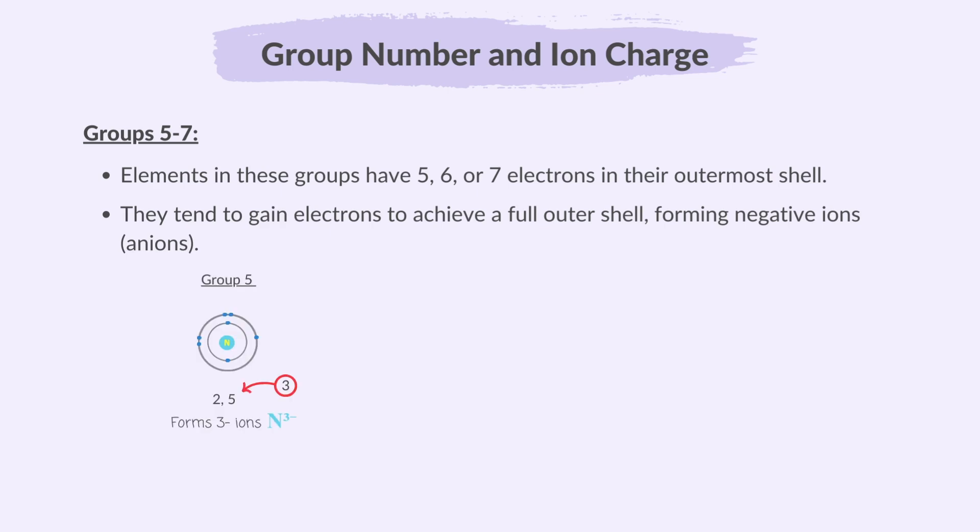In group 5 elements have 5 electrons in their outer shell and forms 3 minus ions, e.g. N3-. In group 6, they have 6 electrons in their outer shell and forms 2 minus ions, e.g. O2-. And in group 7, they have 7 electrons in their outer shell and forms 1 minus ions, e.g. Cl1-.